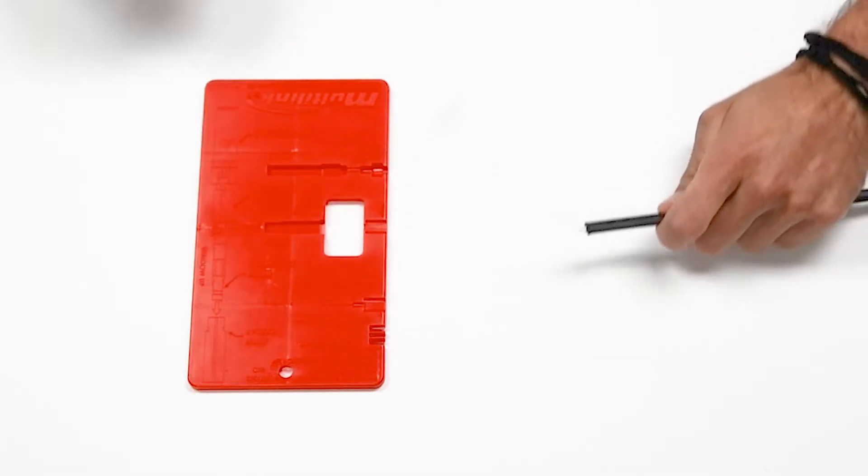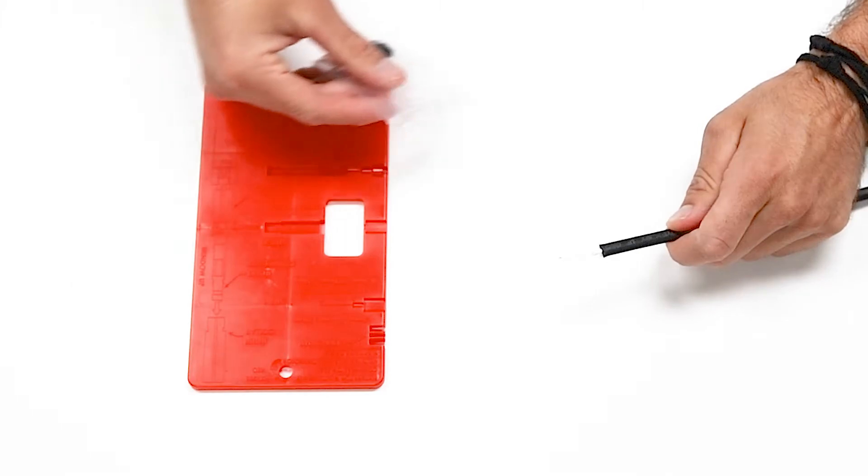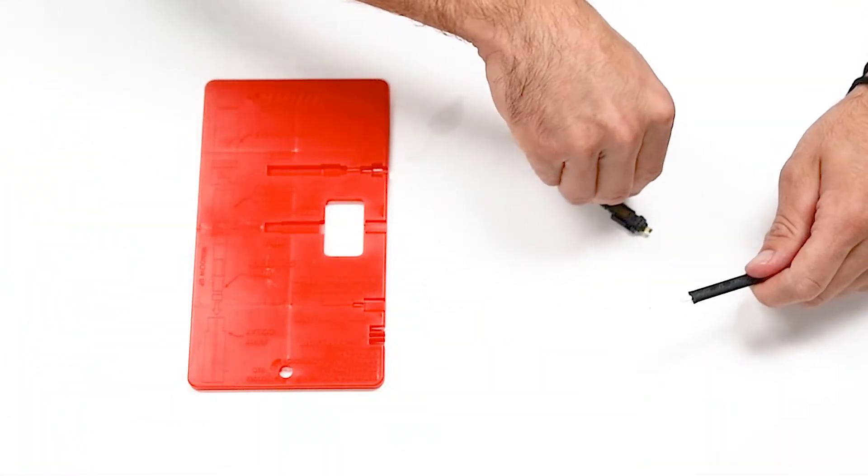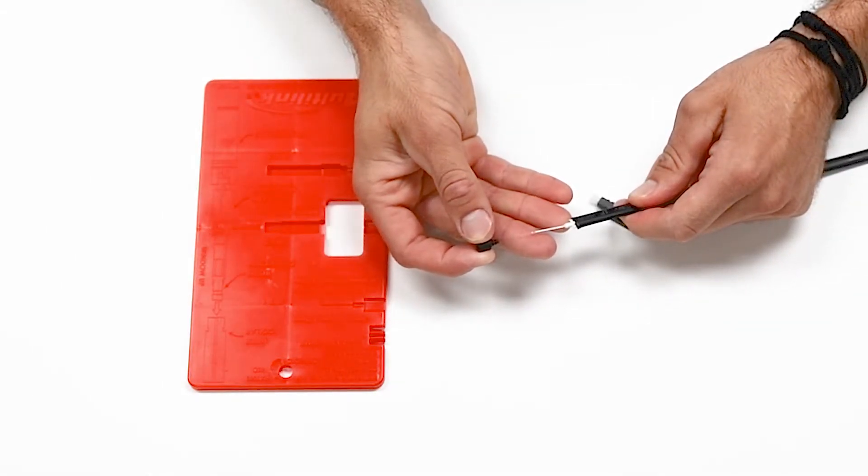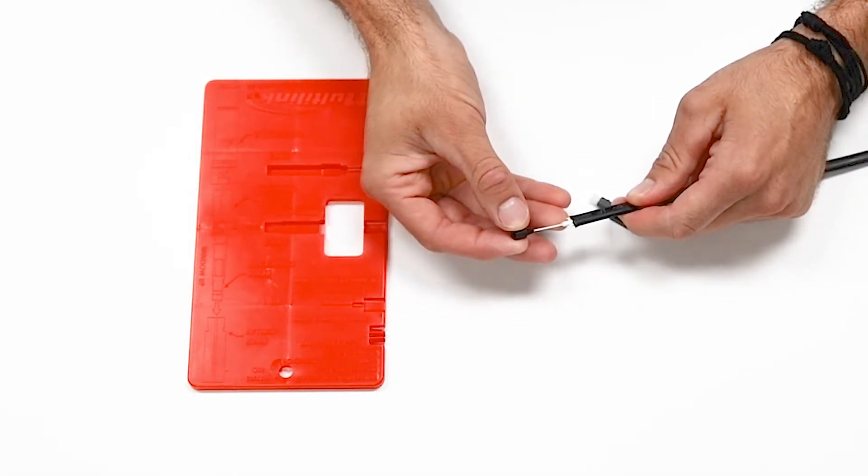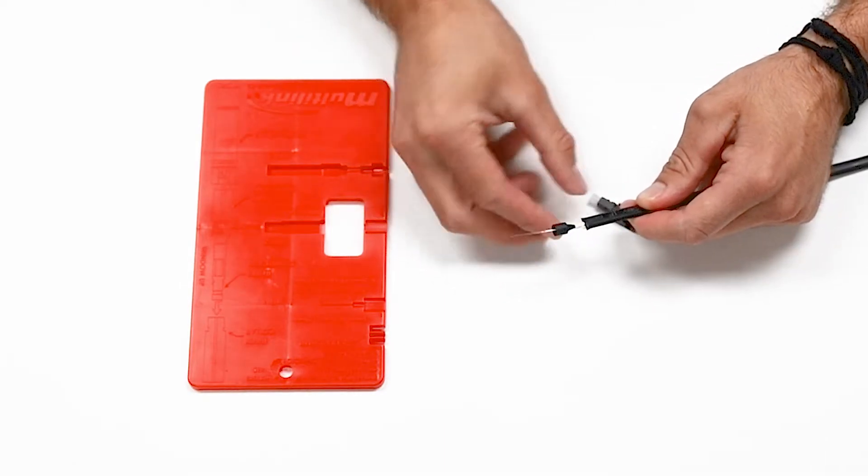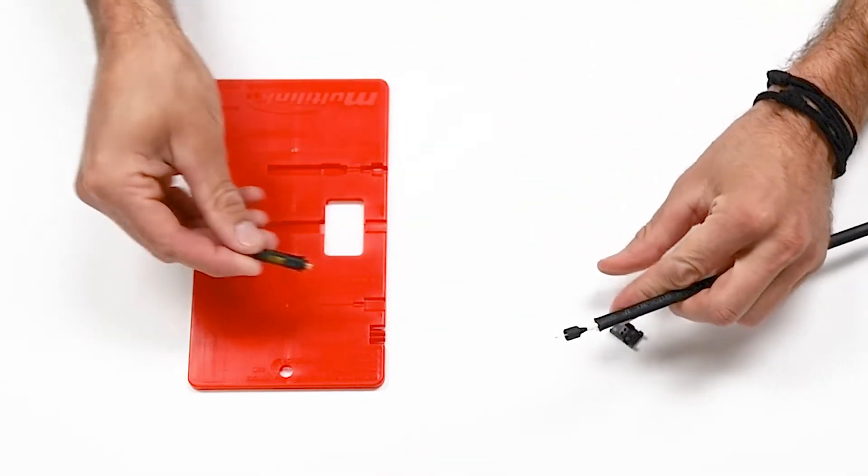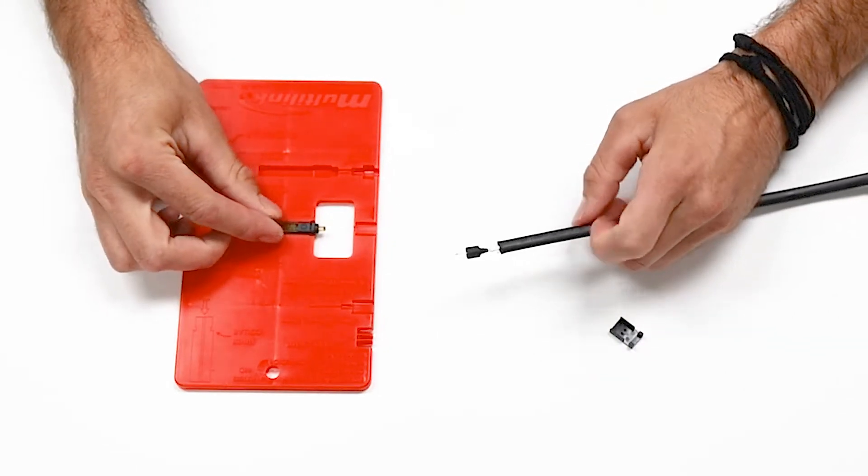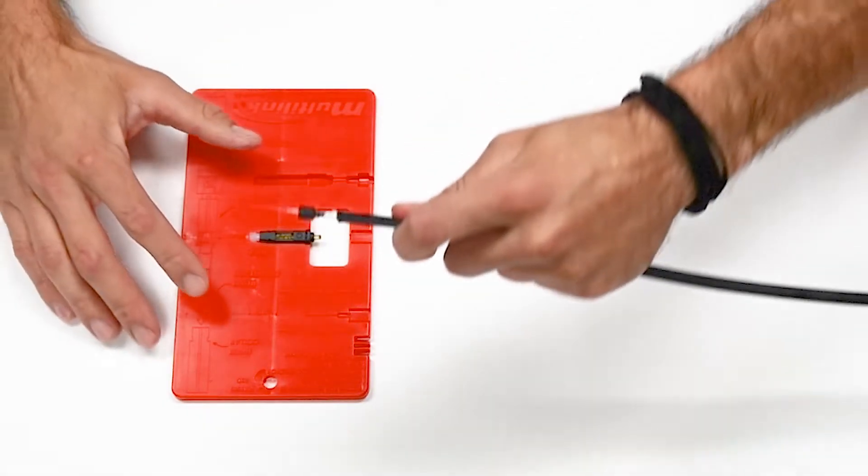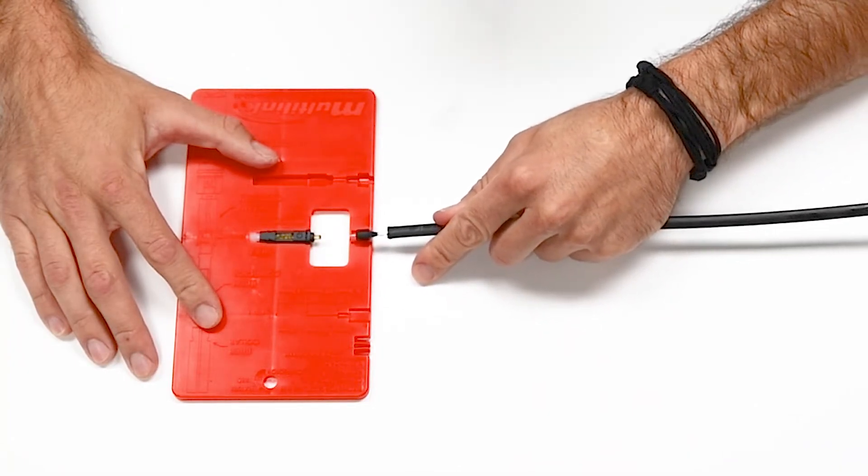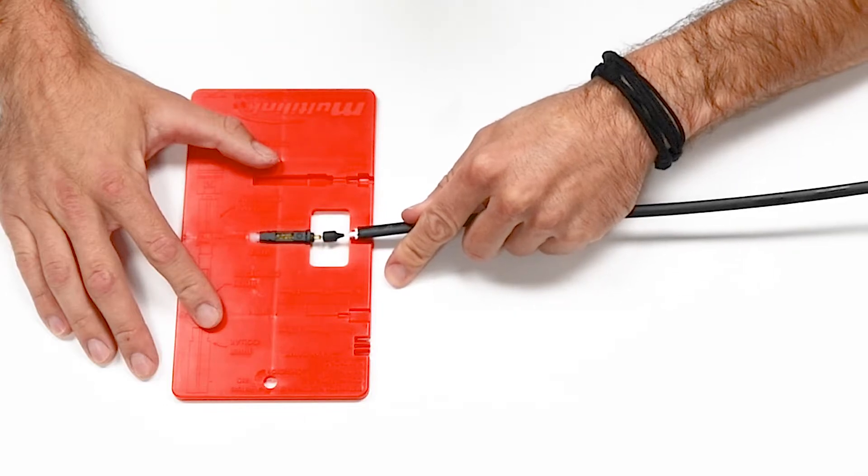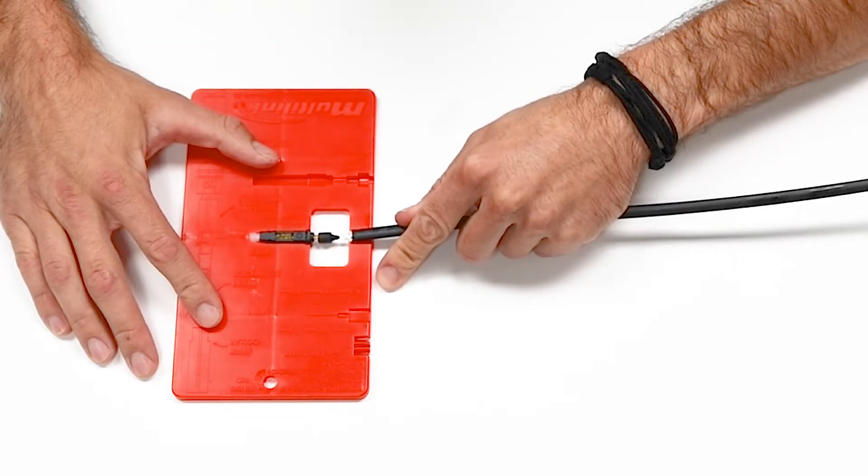Now that cable preparation is complete, you want to grab your template, your connector, and your connector boot. Place the compression boot of the SC APC connector onto the fiber. Now place the connector inside of step two on the template. Slide the prepared fiber inside of the connector, and once seated properly, press the compression boot onto the connector.